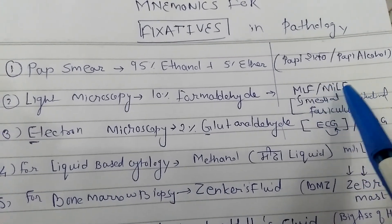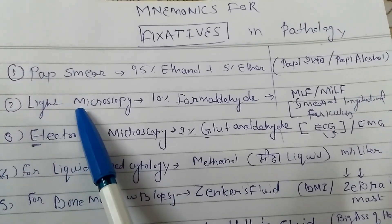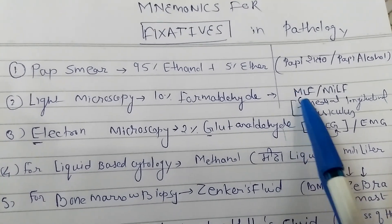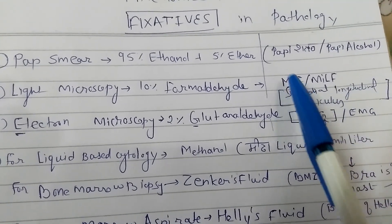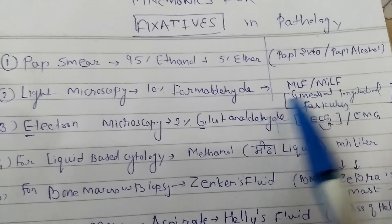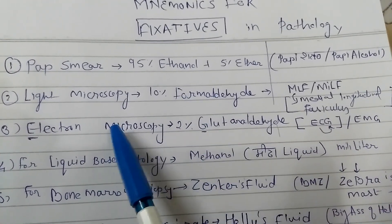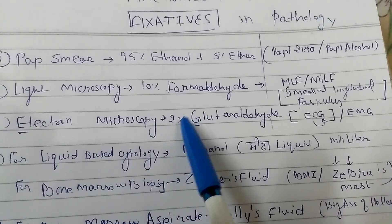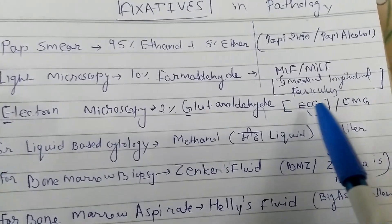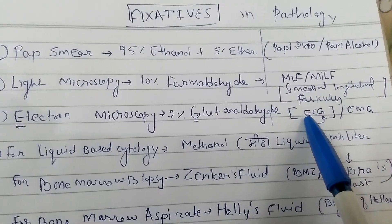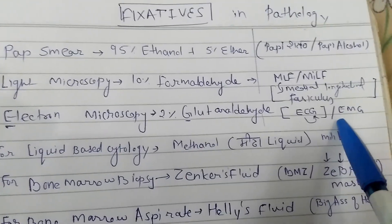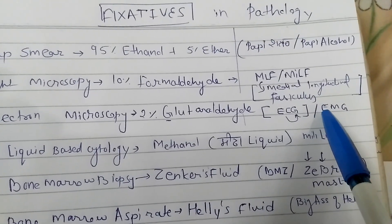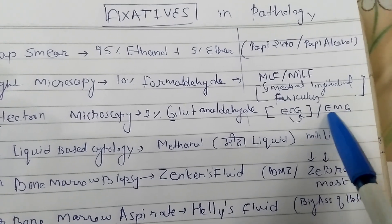In ophthalmology, we read about MLF lesions — so M for microscopy, L for light, F for formaldehyde. For electron microscopy with 2% glutaraldehyde, I have two mnemonics: ECG — E for electron, C can be ignored, G for glutaraldehyde; or EMG — E for electron, M for microscopy, G for glutaraldehyde. Electromyography helps remember electron microscopy glutaraldehyde.